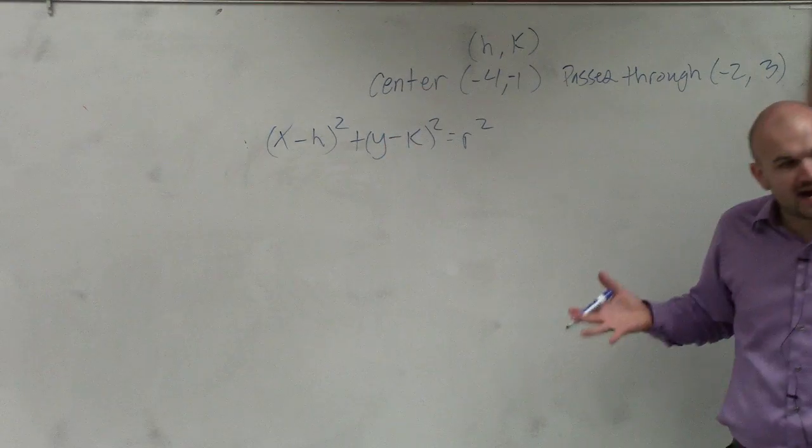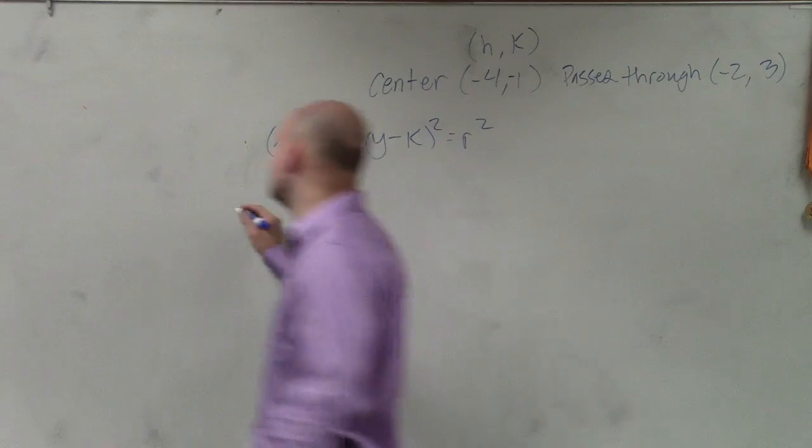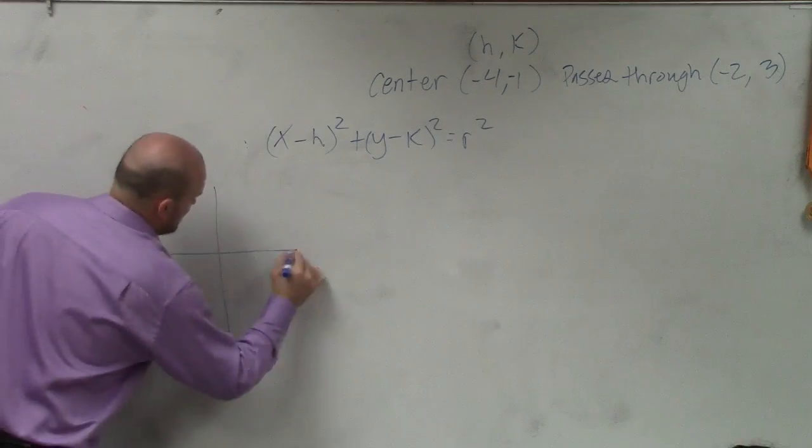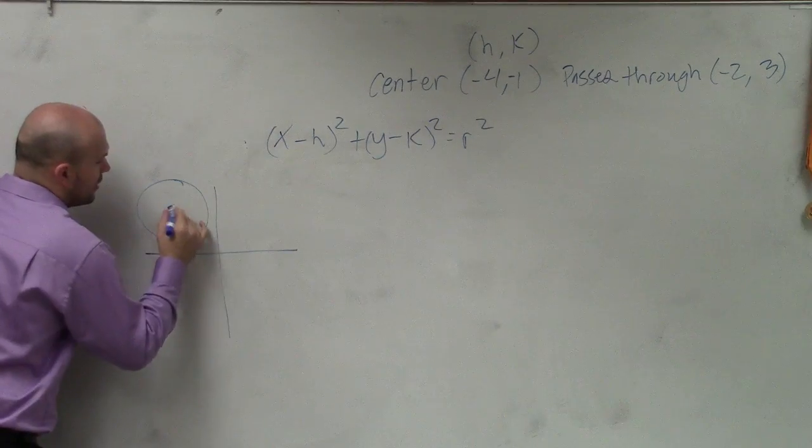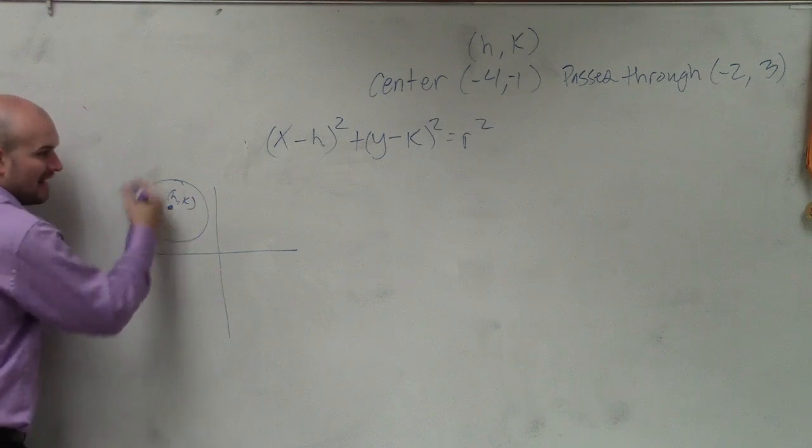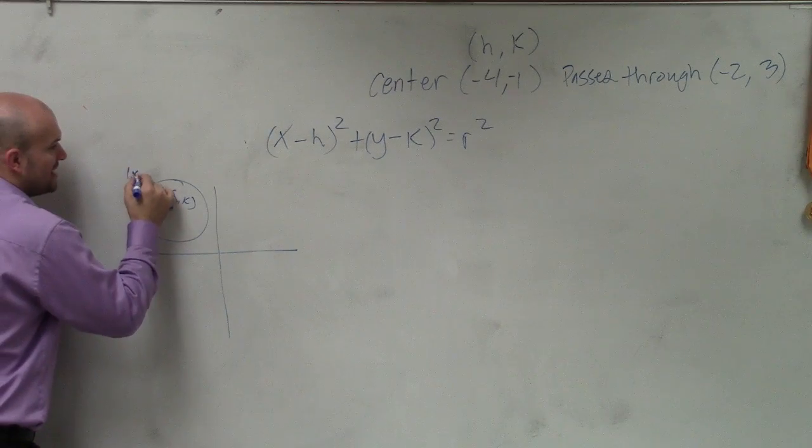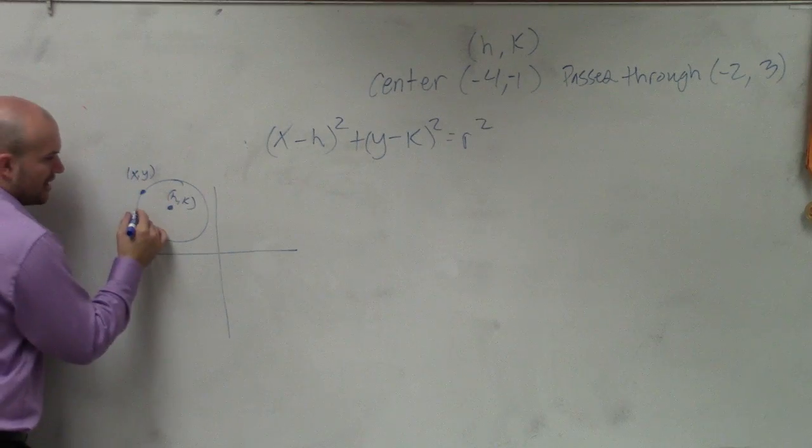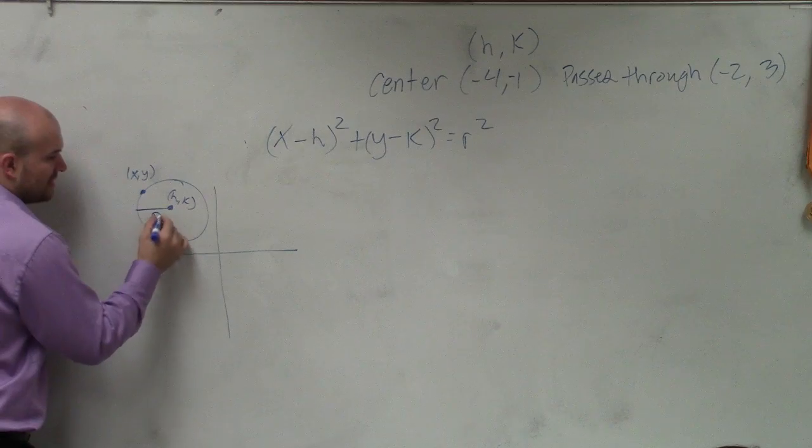They give us a point on the circle. And now when we talked about a circle, the equation of a circle, I said that h comma k is the center. And any point on the circle can be represented as x comma y. And the distance from the center to any point is r.